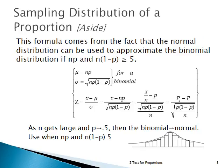A proportion is binomially distributed — two states, success or not, with probabilities P and 1 minus P. That obviously follows the binomial distribution. However, as N gets large and N times P and N times 1 minus P are both at least 5, the distribution gets approximately close to a bell-shaped normal distribution, and Z becomes a very good approximation for the sampling distribution of a proportion.